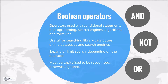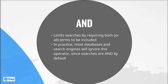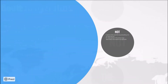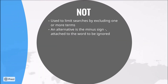The operator AND is used to limit searches by requiring both or all terms to be included. In practice, most databases or search engines will just ignore this operator since searches are AND by default. In contrast, the operator NOT is much more useful. Again, this limits searches, this time by excluding one or more terms. An alternative is the minus sign, which is attached to the beginning of the word which is going to be ignored.